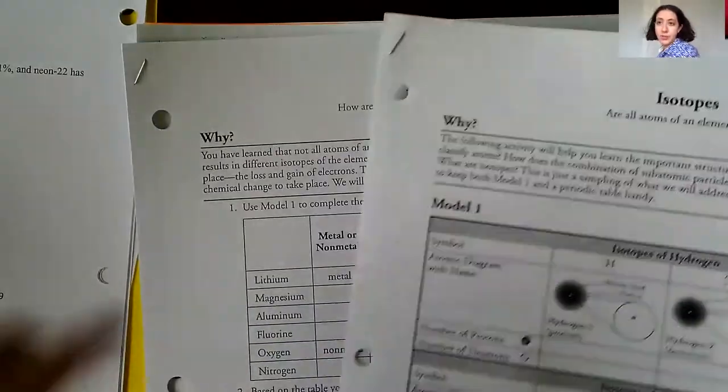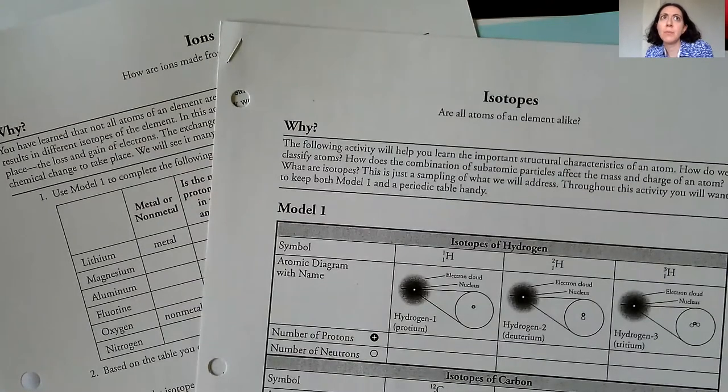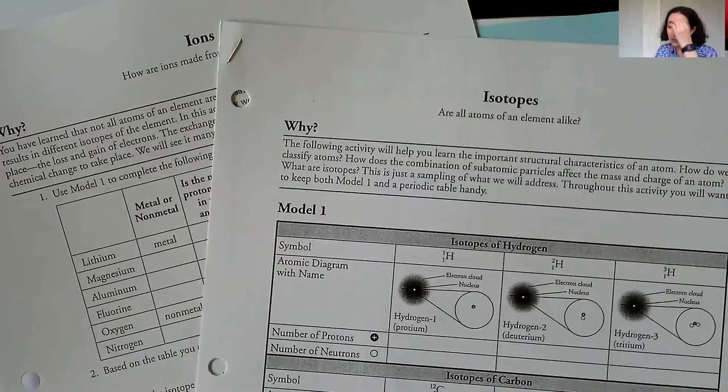These are both POGILs. So POGIL is P-O-G-I-L capitalized. And if I remember correctly it stands for process oriented goal. No, no it's guided inquiry learning. Process oriented guided inquiry learning.